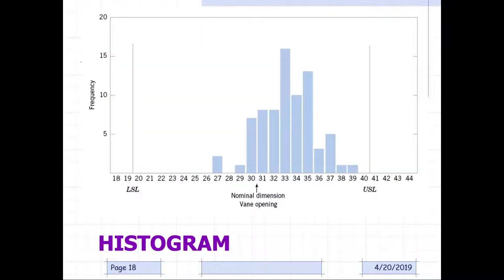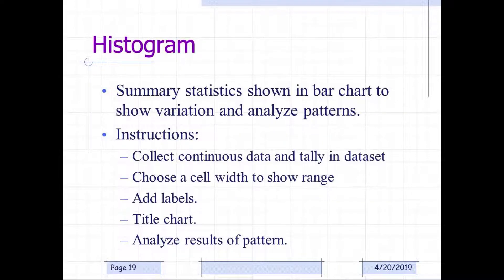So here's a histogram. Histograms are summary statistics shown in a bar chart to show variation and analyze patterns. So the instructions are to collect continuous data and tally in a dataset, choose a cell width to show the range, add the labels, a title, and analyze the results of the pattern.